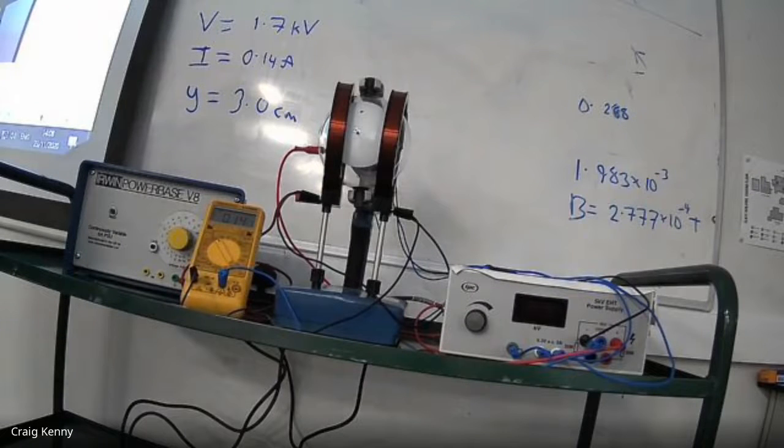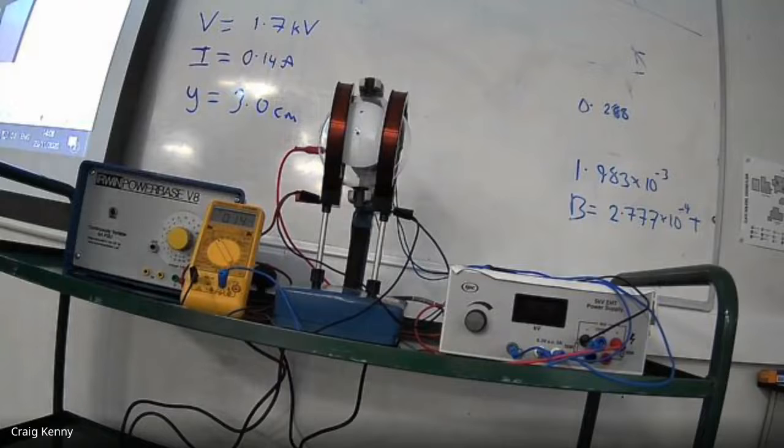All we have to do now is run through some calculations using some equations that I will show you how to derive. And that is JJ Thompson's famous experiment to measure the charge to mass ratio of an electron.